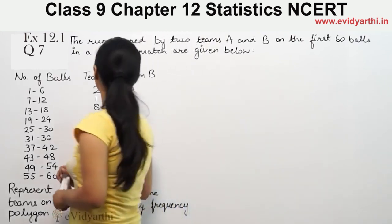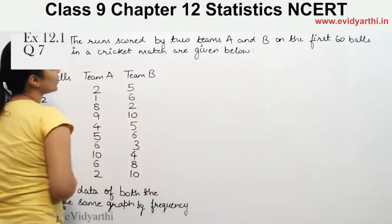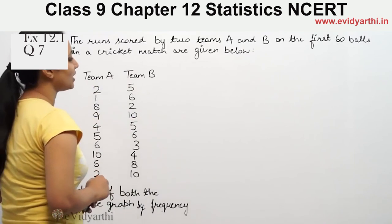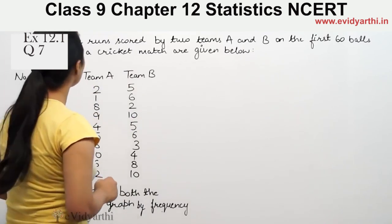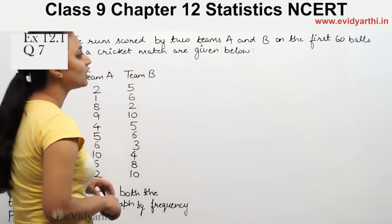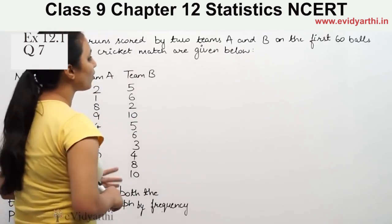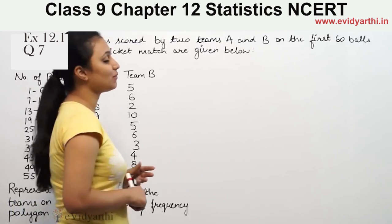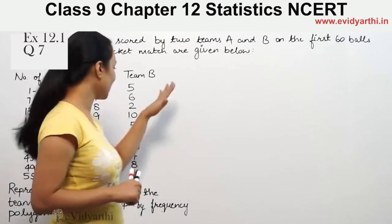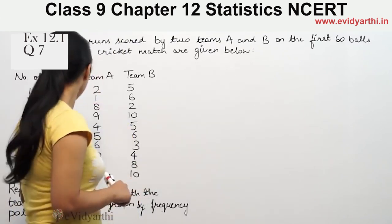It says that runs scored by two teams A and B on the first 60 balls in a cricket match are given. We need to represent the data of both teams on the same graph by frequency polygon.